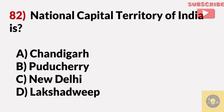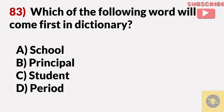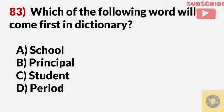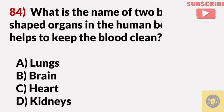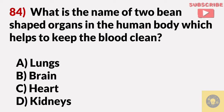The National Capital Territory of India is? Answer C, New Delhi. Which of the following words will come first in the dictionary? Answer D, period. What is the name of the two bean-shaped organs in the human body that help keep the blood clean? Answer D, kidneys.